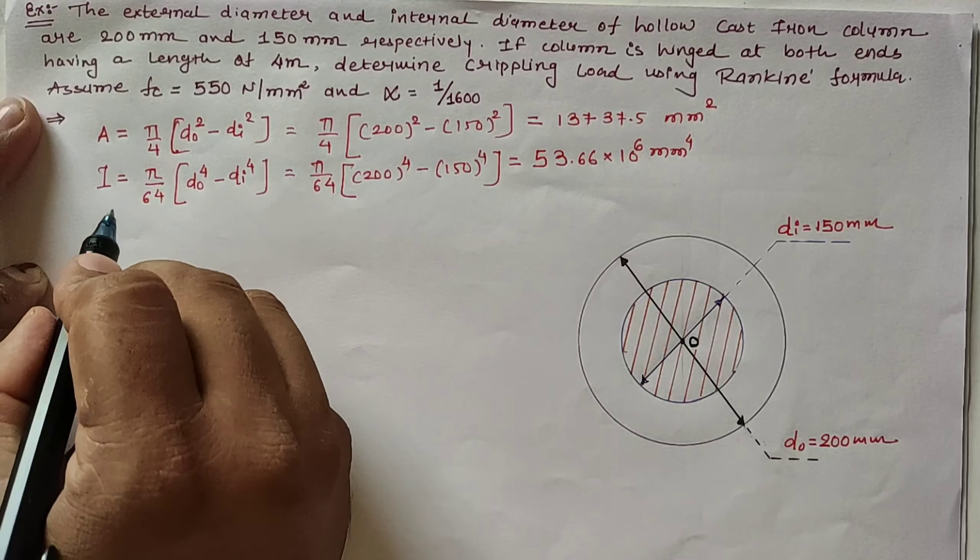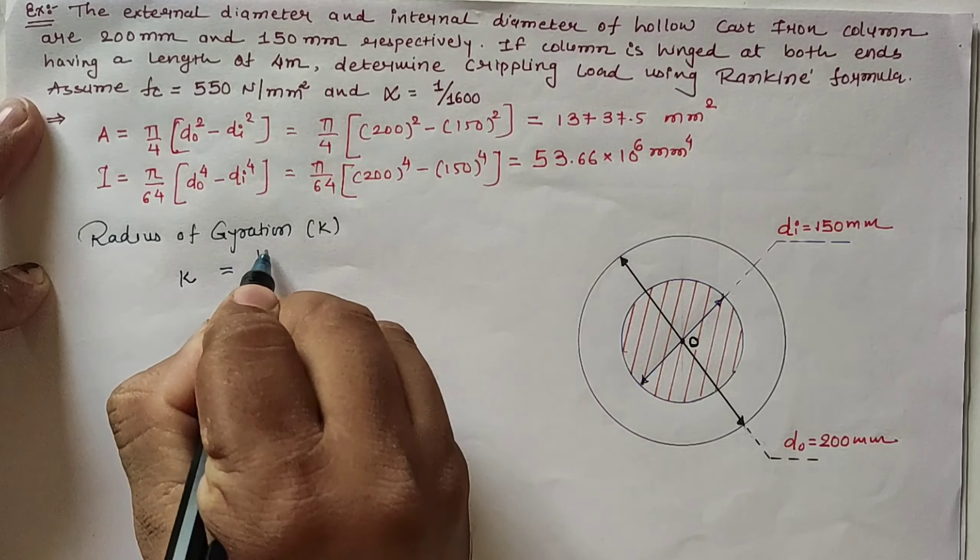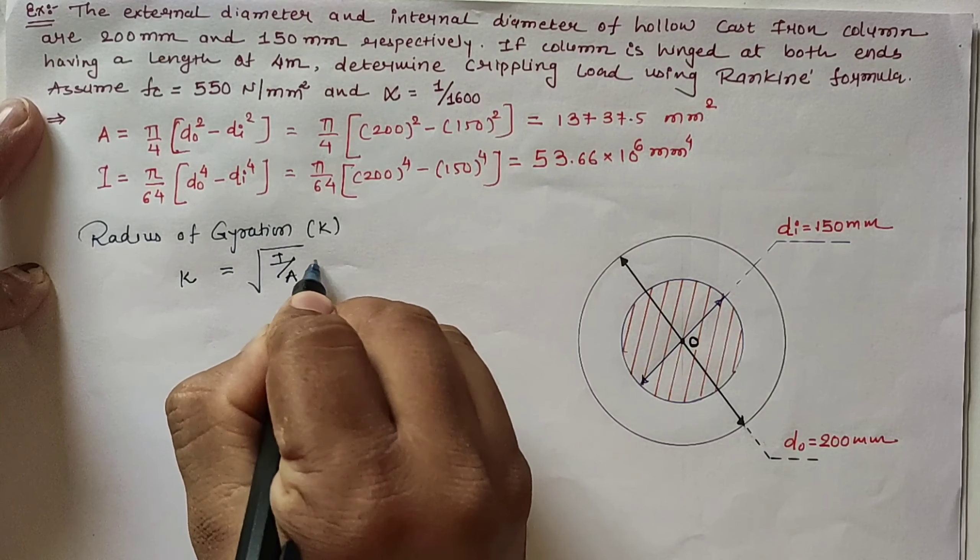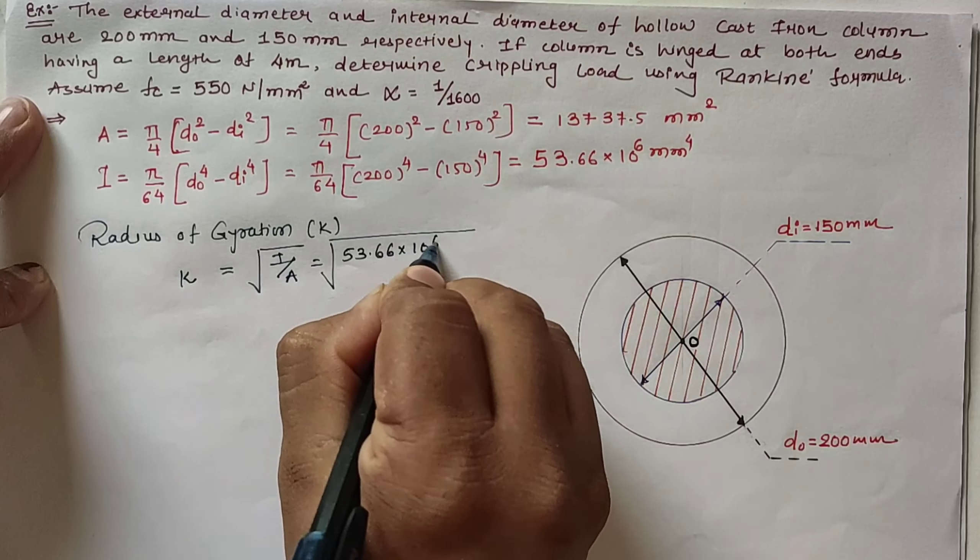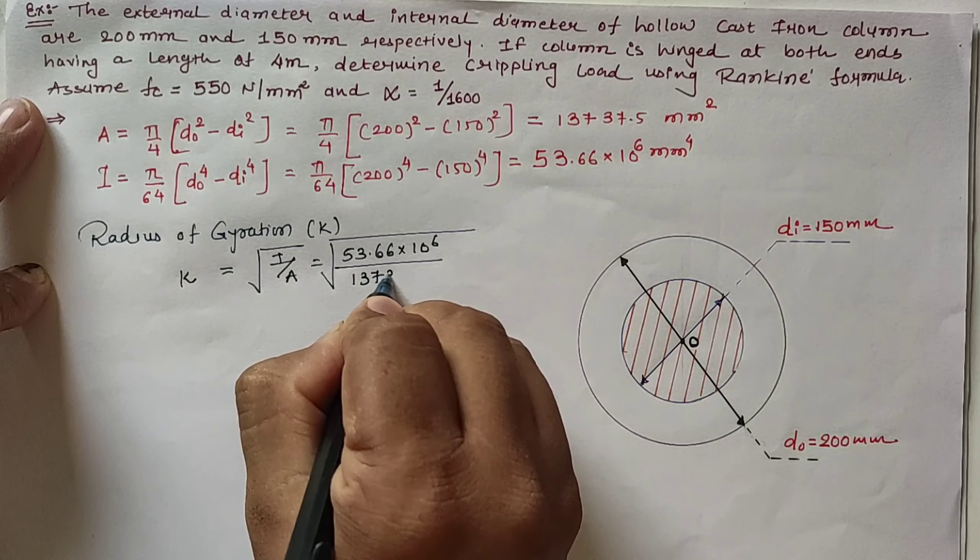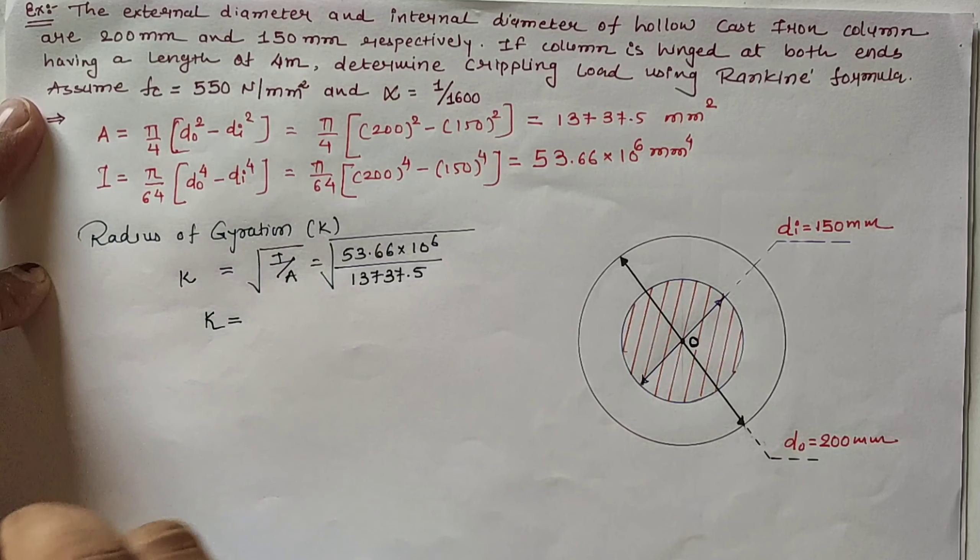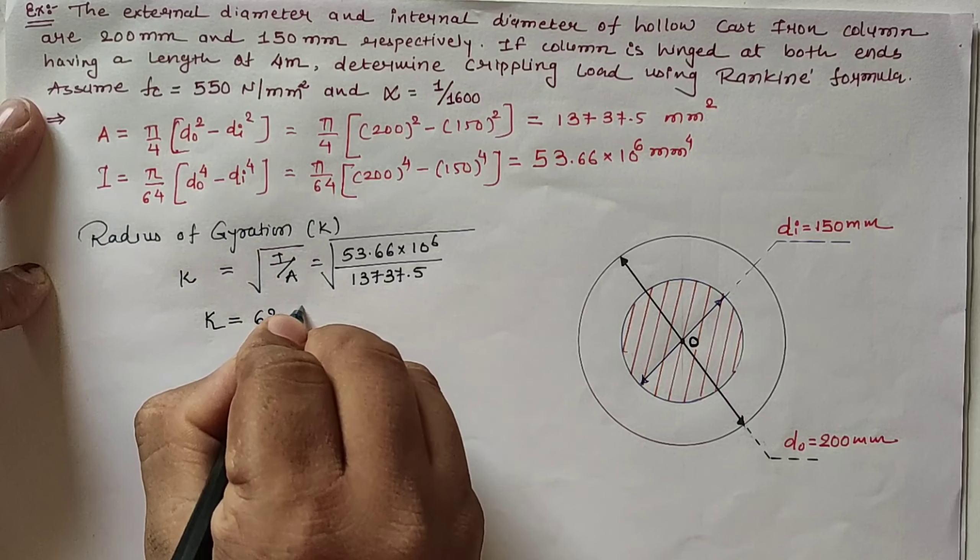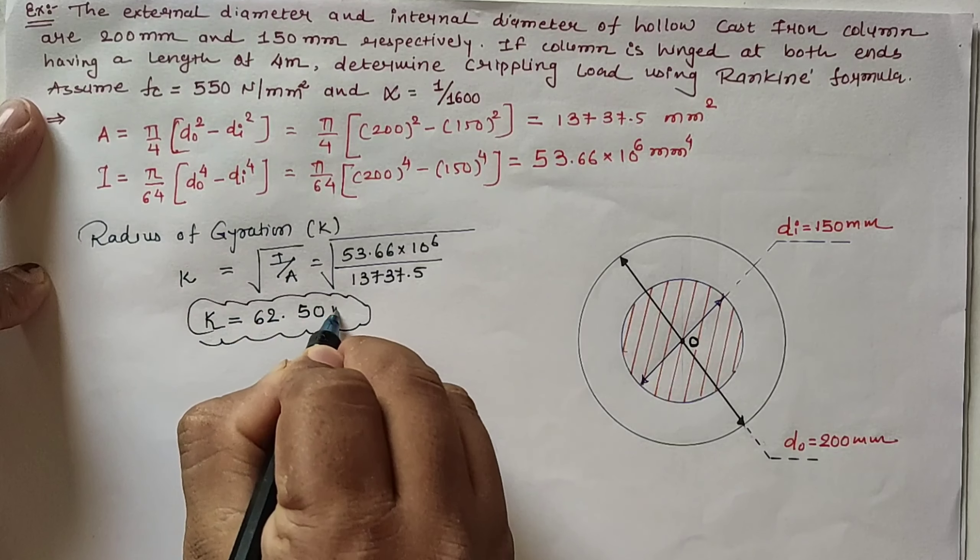For this section, if we calculate radius of gyration k, then k = √(I/A) = √(53.66 × 10⁶ / 13,737.5) = 62.50 mm.